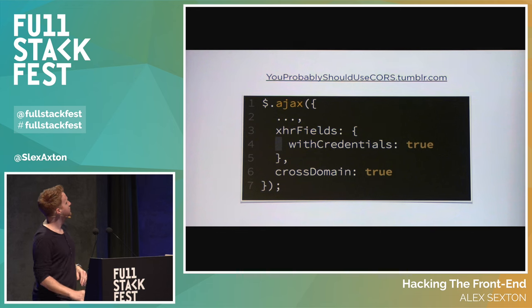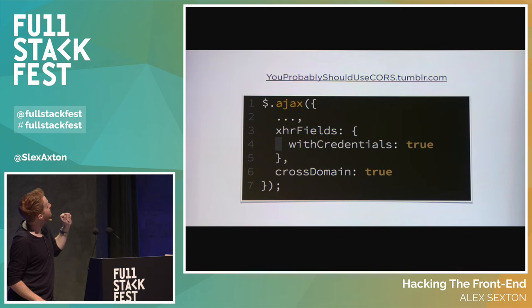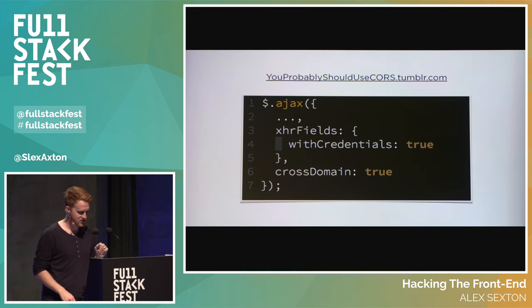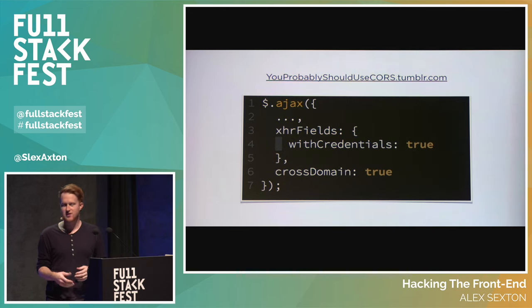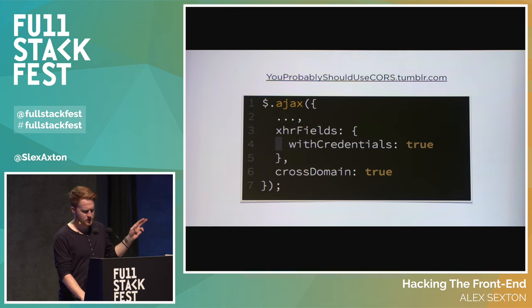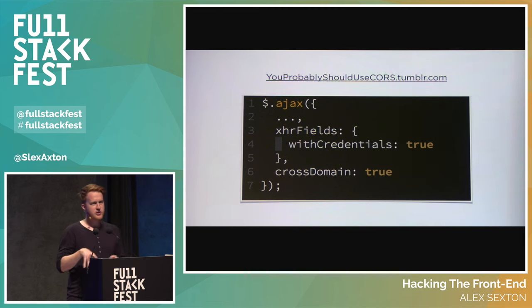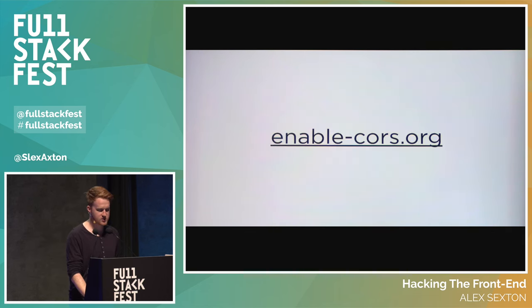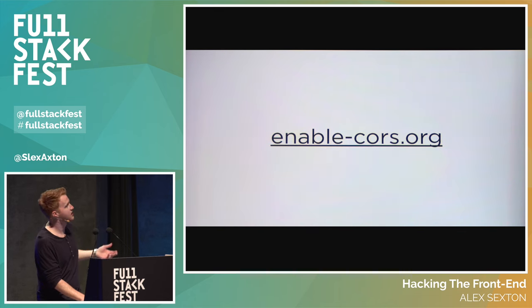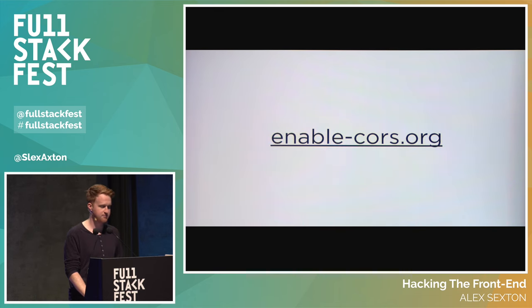You should probably use CORS — Cross-Origin Resource Sharing. Use headers to whitelist different domains you're willing to talk to. That's a better solution than JSONP for talking cross-domain. There's a real website you can go to that will help you figure out how to enable it in different servers.